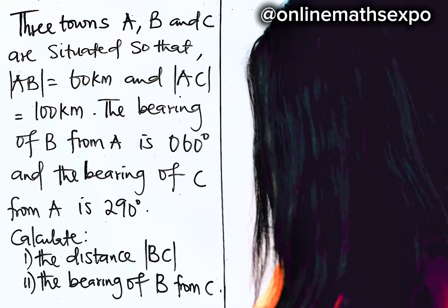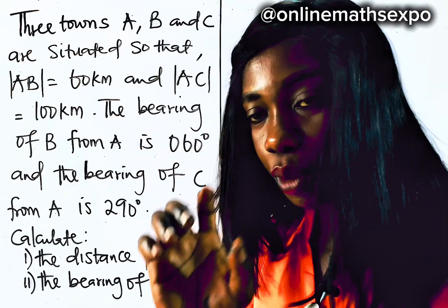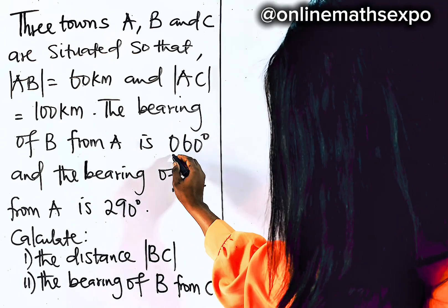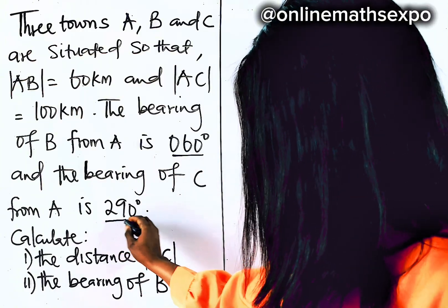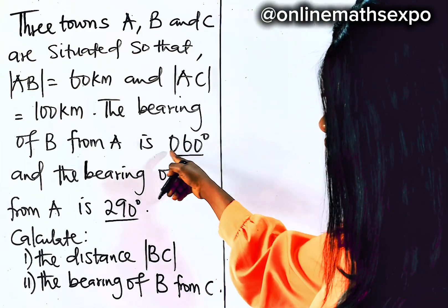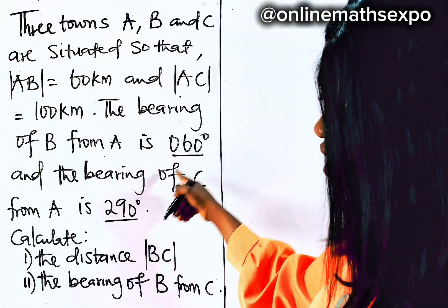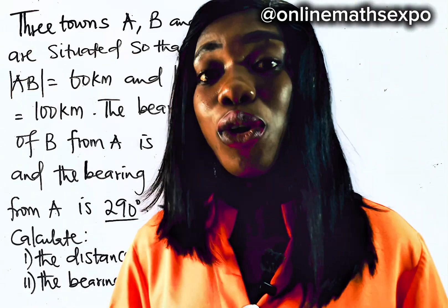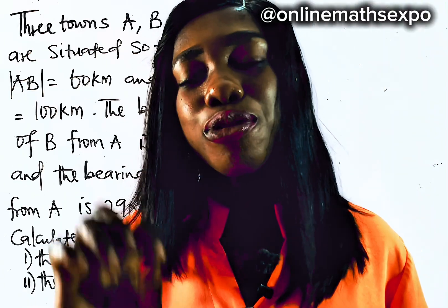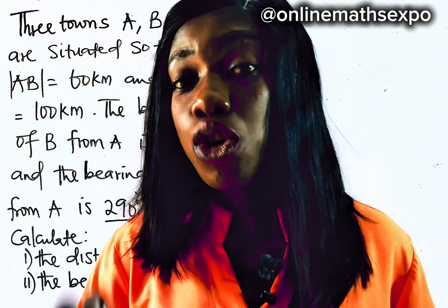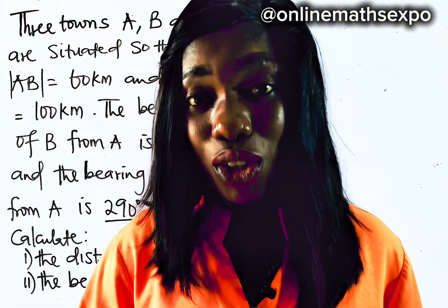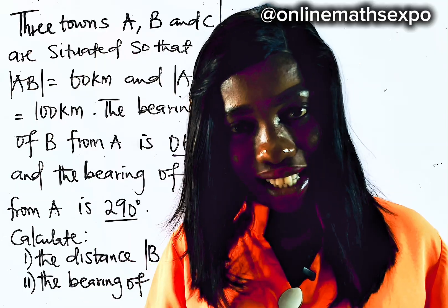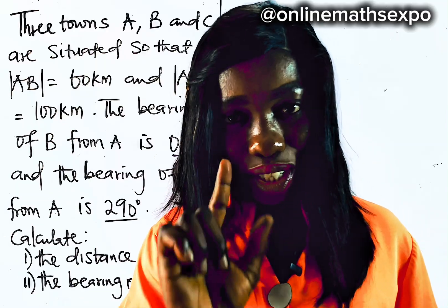Now, you see that we have 60 degrees and 290 — both are three digits. That reminds you of three-figure bearing, and for every three-figure bearing you must start from the north, and when you start from the north you go in a clockwise direction. It's very important.